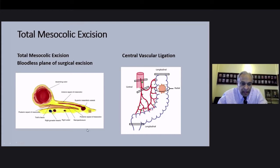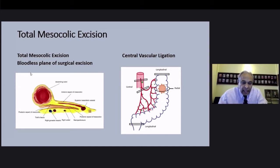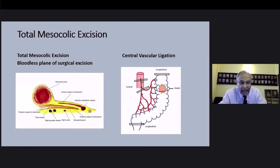Total mesocolic excision extends the same principle to the colon. For the benefit of trainees, there is an anatomic component, a vascular component, and a lymph node component of mesocolic excision. All three taken together formulate the package of total mesocolic excision, also called complete mesocolic excision or CME. The mesocolic excision plane is an anatomical plane that separates the anteriorly located visceral peritoneum from the posterior fascia overlying the retroperitoneal structures, including the ureter.